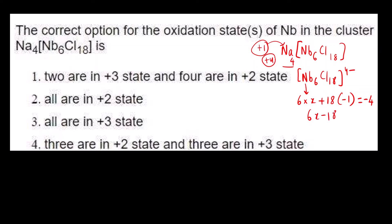6x minus 18 which is equal to minus 4. 6x will be, minus 18 will become plus 18, so 18 minus 4 that is plus 14. Now what does this mean? We don't have to find out the value of x. What does this mean is that 6 niobium atoms, the total charge will be plus 14. The total charge is plus 14.